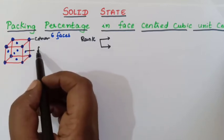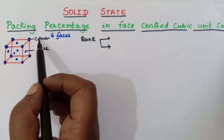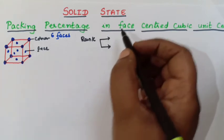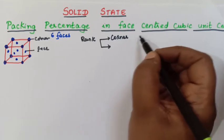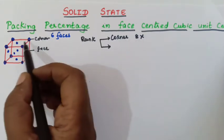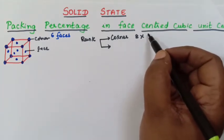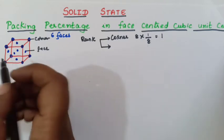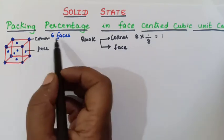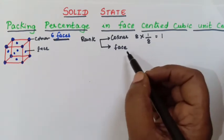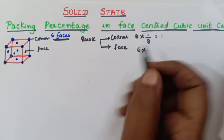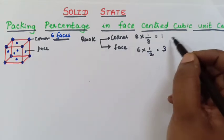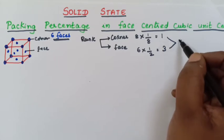Corner particles — so in the corner totally 8 particles are present, and you know that corner particles will be shared by 8 unit cells. So 8 × 1/8 = 1. And in the face, totally 6 faces are there so 6 particles will be present, and each particle will be shared by 2 unit cells. So 6 × 1/2 = 3. So totally 1 + 3 = 4.